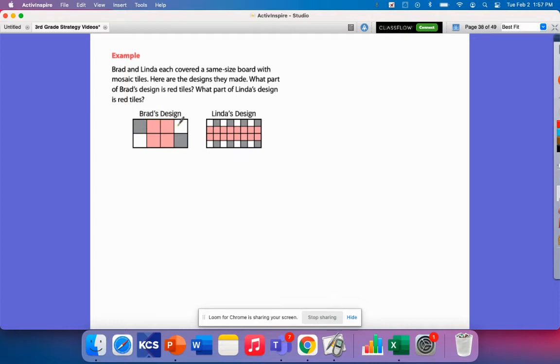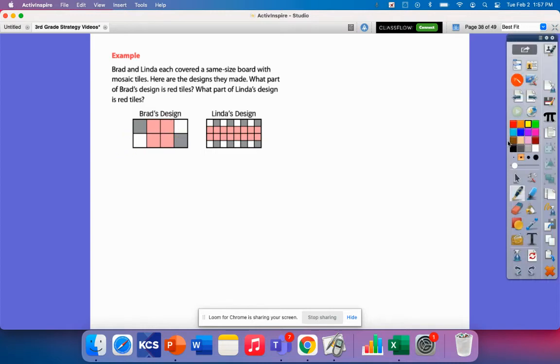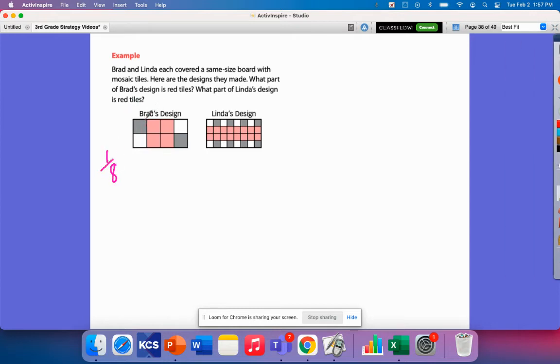So he has one, two, three, four, five, six, seven, eight. That means that his tiles are divided into one-eighth sections. Each tile represents one-eighth of the entire board.